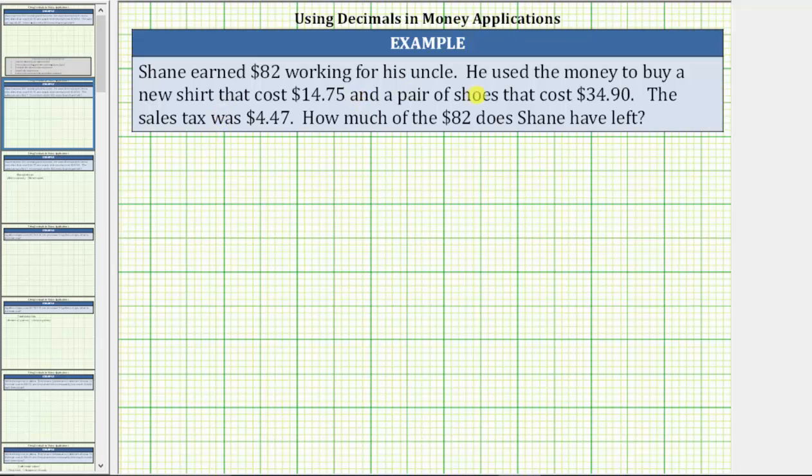Shane earned $82 working for his uncle. He used the money to buy a new shirt that cost $14.75 and a pair of shoes that cost $34.90. The sales tax was $4.47. How much of the $82 does Shane have left?